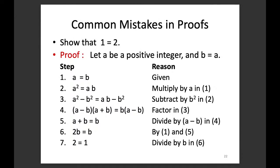Now we have studied many different proving techniques, but we need to be careful because there can be many mistakes when doing proofs. Here is one famous example where we try to show that 1 is equal to 2 — obviously wrong. Let's find out where it goes wrong.